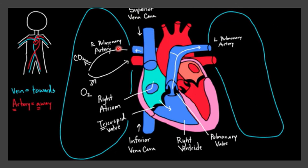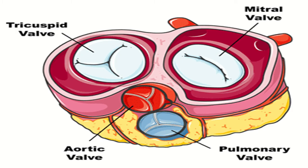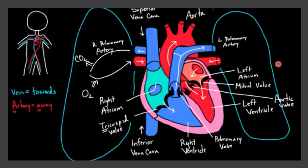When the pulmonary artery carries the blood to the lungs, the lungs take away the carbon dioxide from the blood and mix oxygen with the blood. This process is known as oxygenation of blood. Now the oxygenated blood re-enters into our heart through the pulmonary vein. The pulmonary vein is the only vein in the human body which carries oxygenated blood.